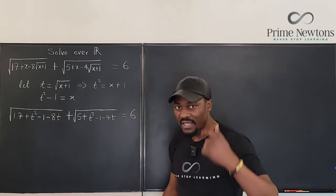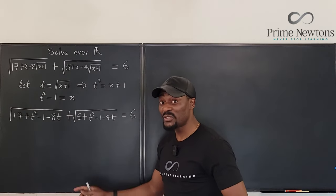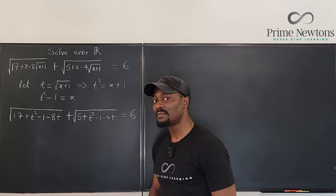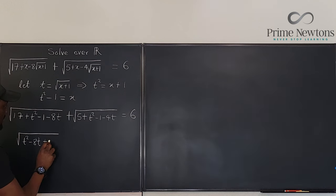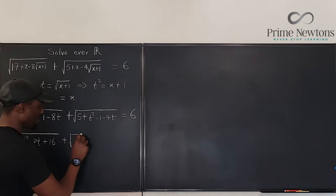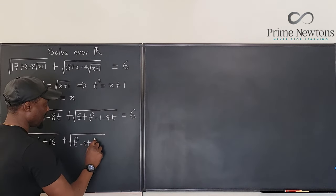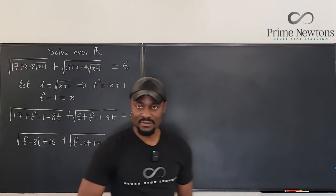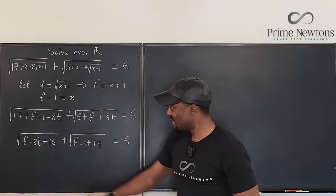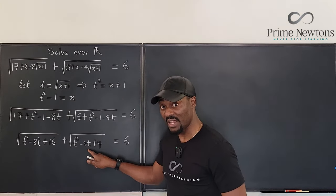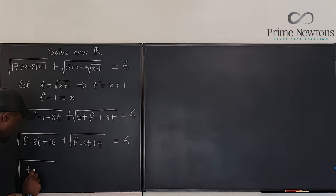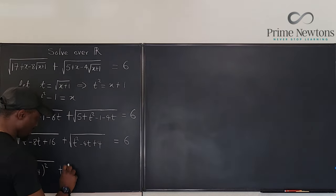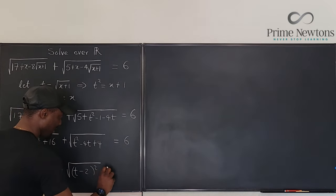So how is this different? If you can see, this question was designed to be solved this way. If we clean this up, this is the square root of t squared minus eight t plus 16 plus the square root of t squared minus four t plus four equals six. This here is a perfect square. This here is a perfect square. What I have here is the square root of t minus four squared plus the square root of t minus two squared equals six.